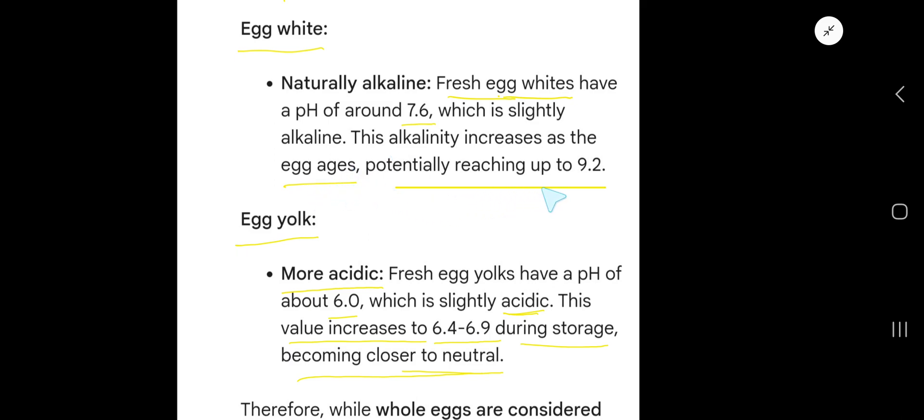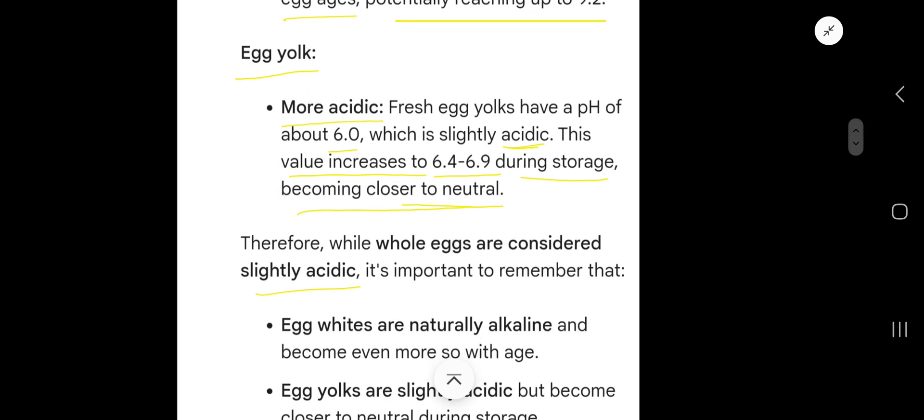potentially reaching up to 9.2. Egg yolk: more acidic. Fresh egg yolks have a pH of about 6, which is less than 7, so egg yolk is slightly acidic. This value increases to 6.4 to 6.9 during storage...